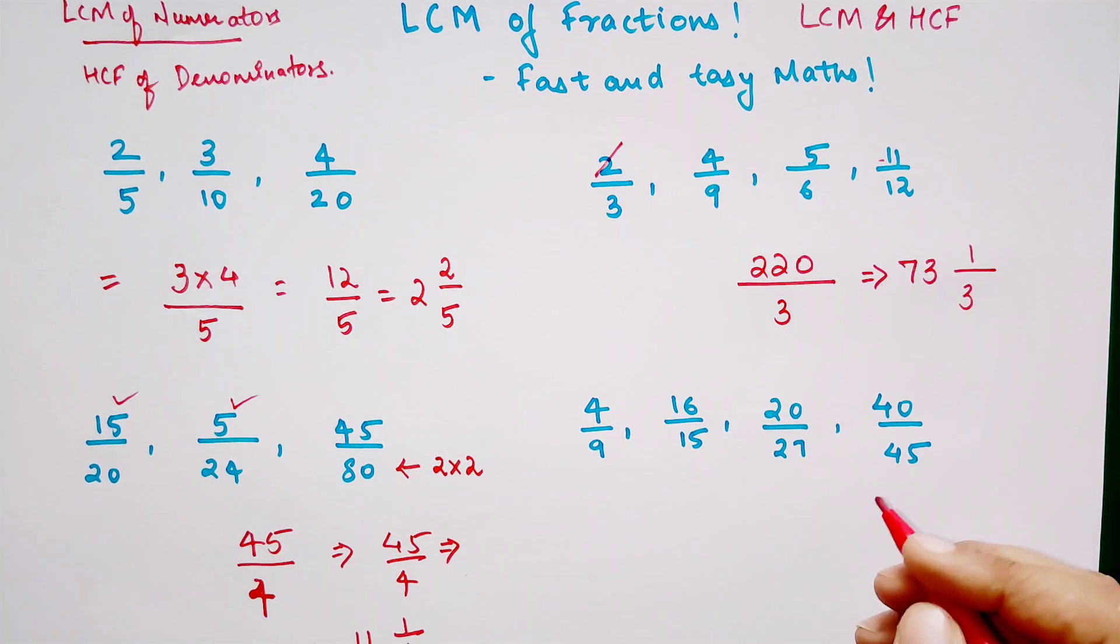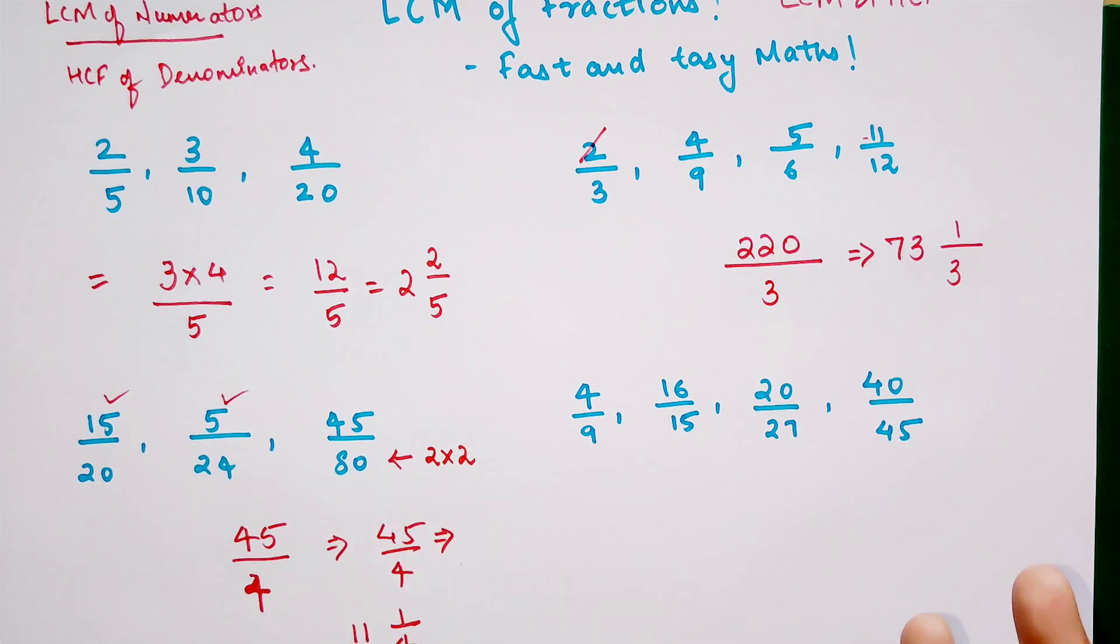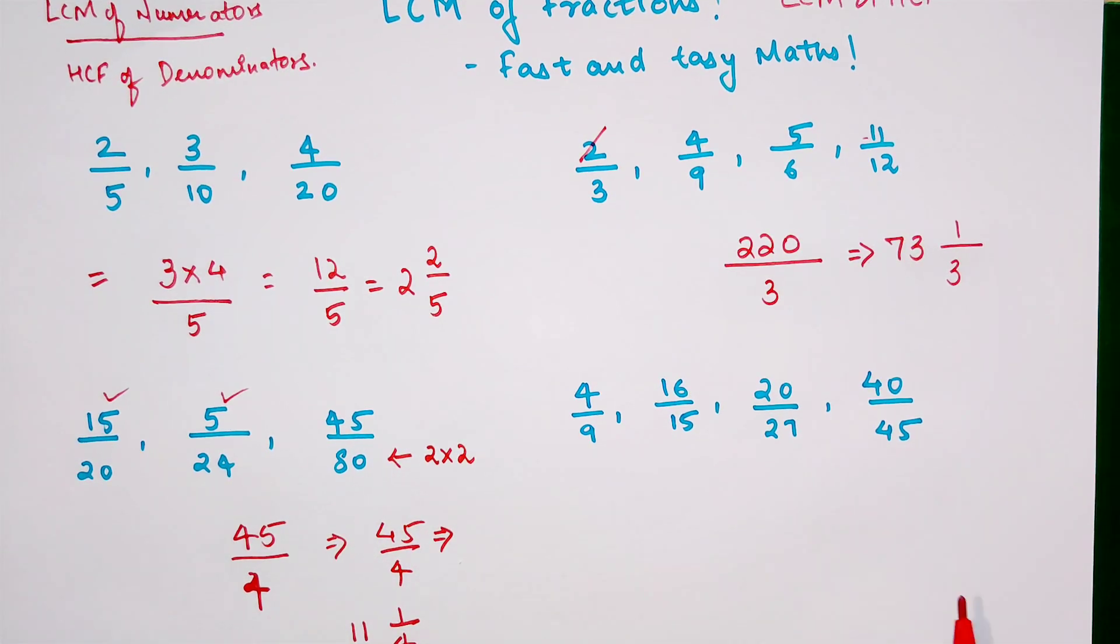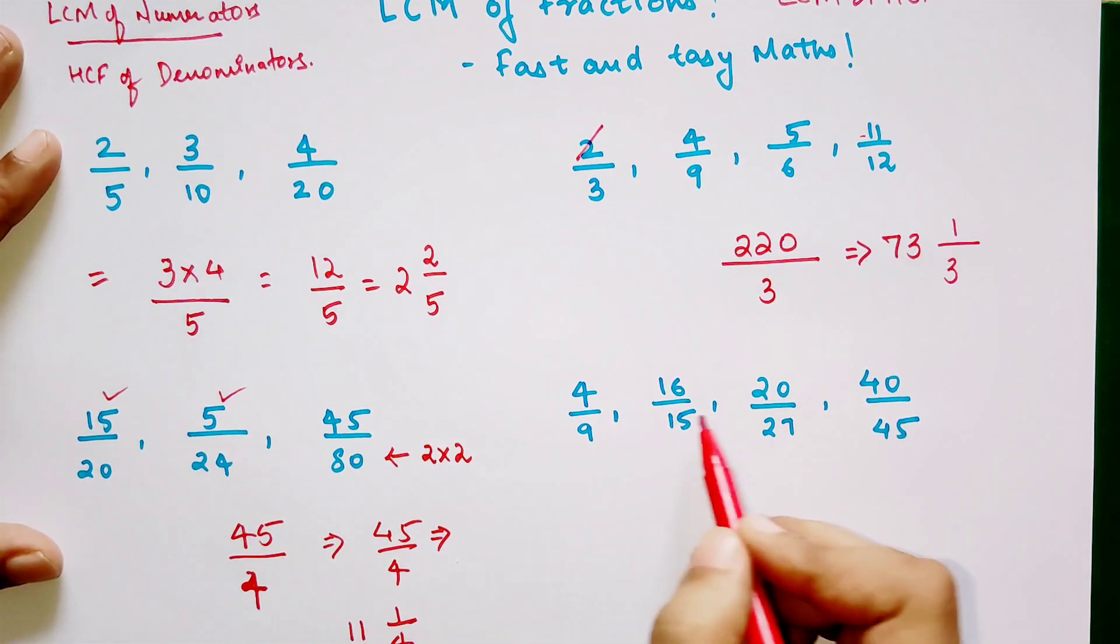Now over here, let's look at this. I want all of you to take a pause and try it on your own at least during the video itself. So here, what you get is, see, we can say that 16 comes in 4's table, so we can cancel the 4.